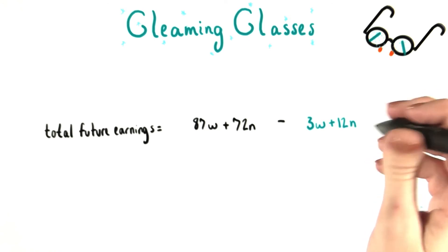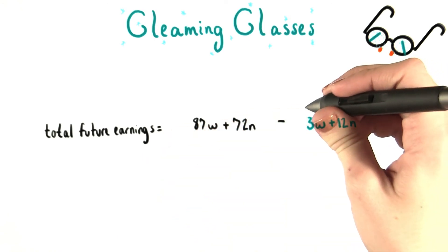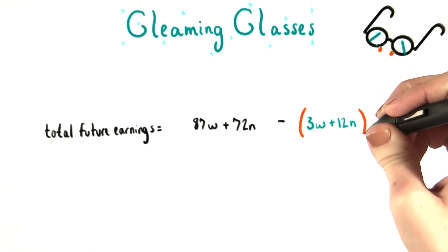But we need to do one thing to change this equation. We need to add parentheses around 3w plus 12n.